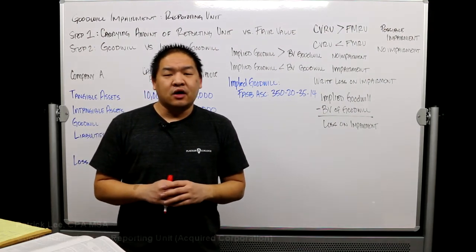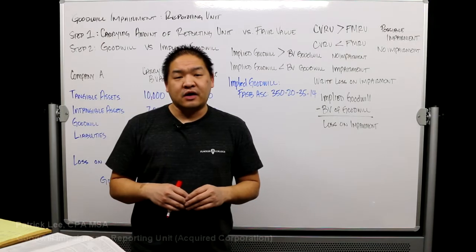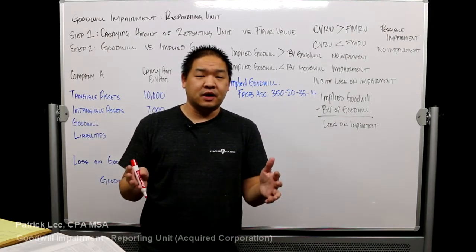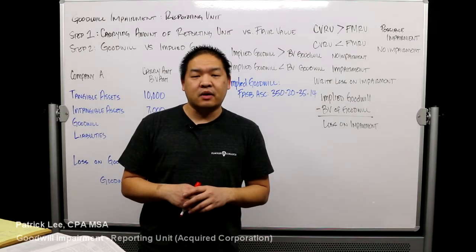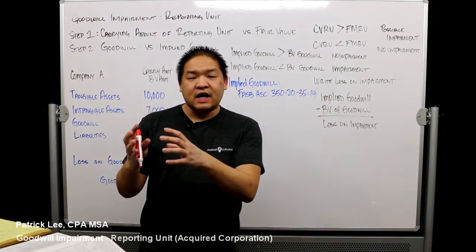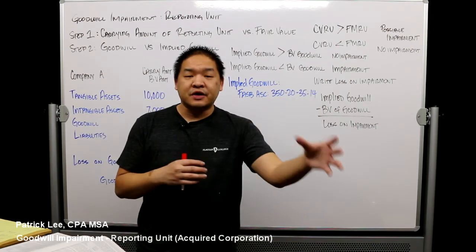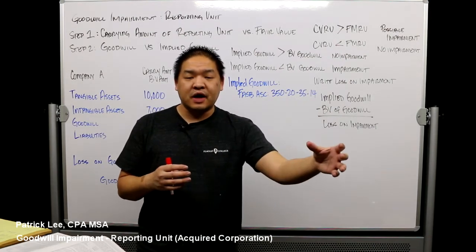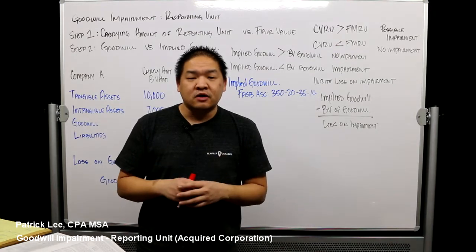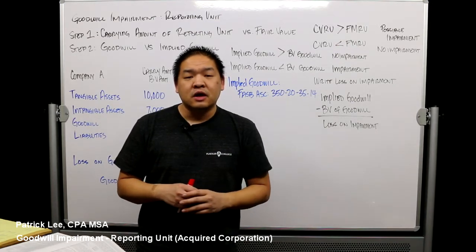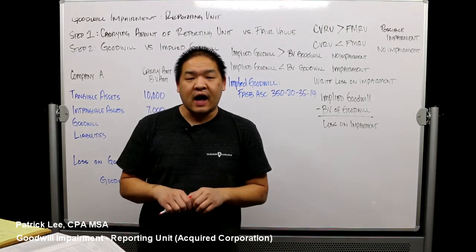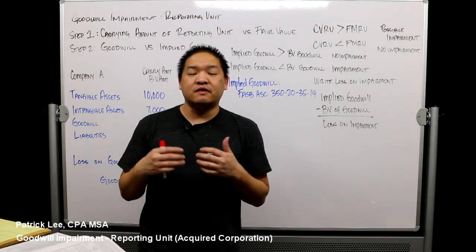In this lesson we're going to go over how to calculate impairment of goodwill when goodwill has to do with the reporting unit. When we talk about a reporting unit, we're talking about when one company acquires another company for more than fair value — the excess over fair value goes to goodwill. We're going to look at how to calculate impairment of goodwill.